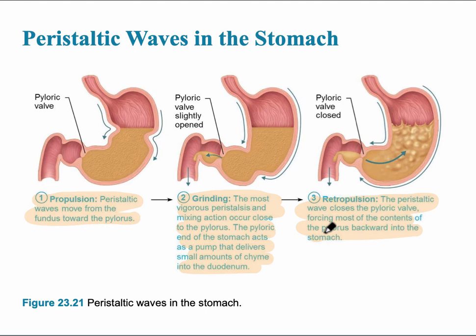Approximately three milliliters of chyme is squirted into the duodenum with each peristaltic wave. Pacemaker cells in the walls of the stomach actually control this churning movement.